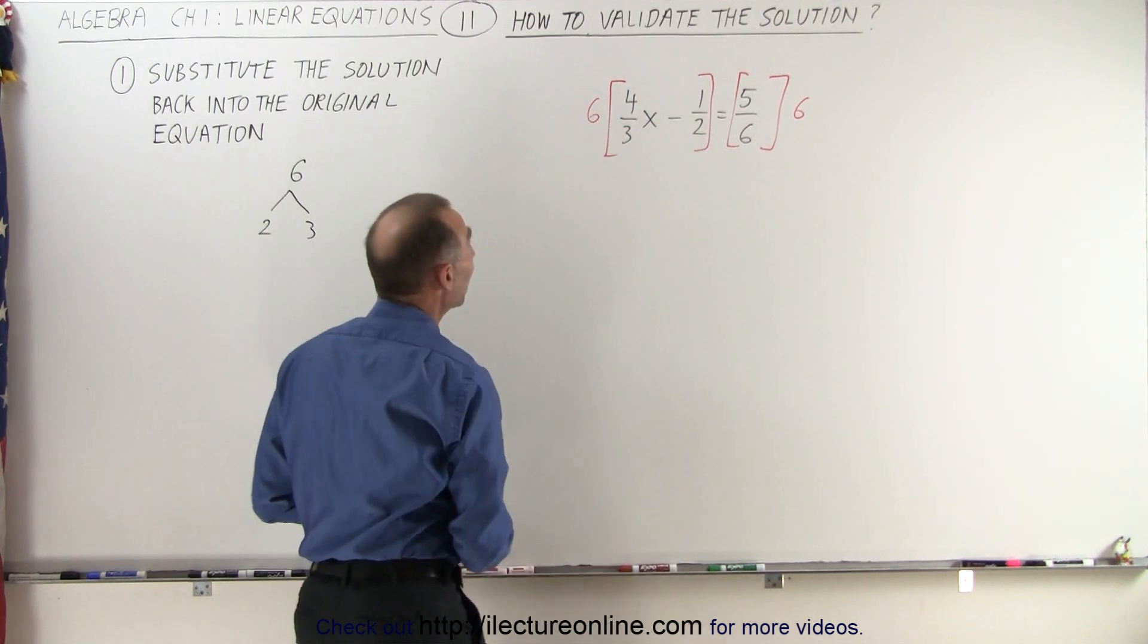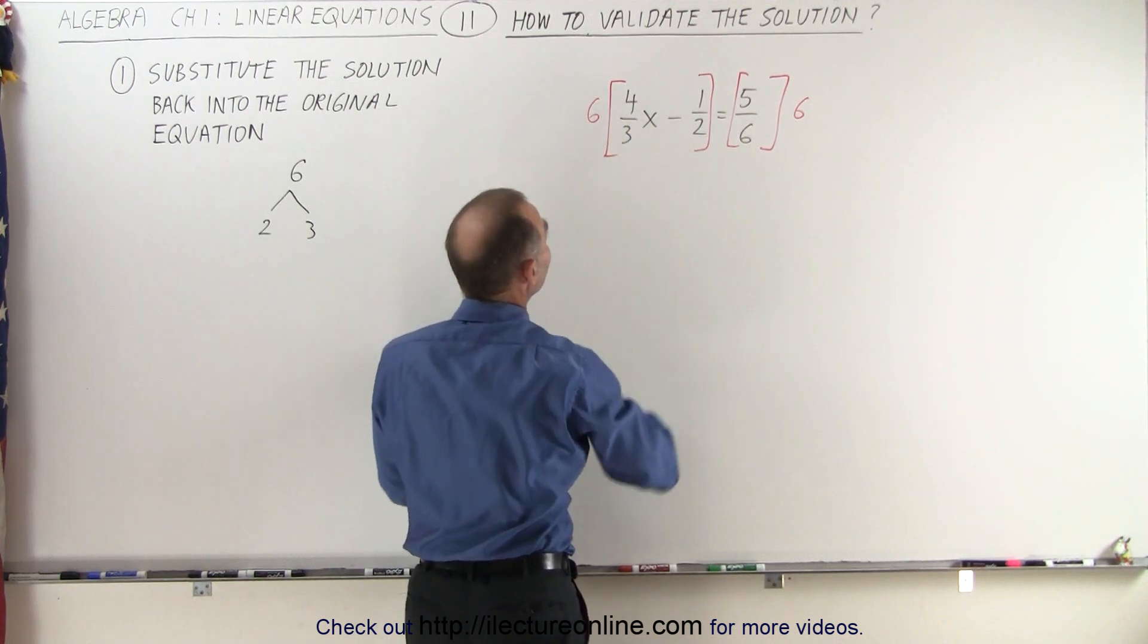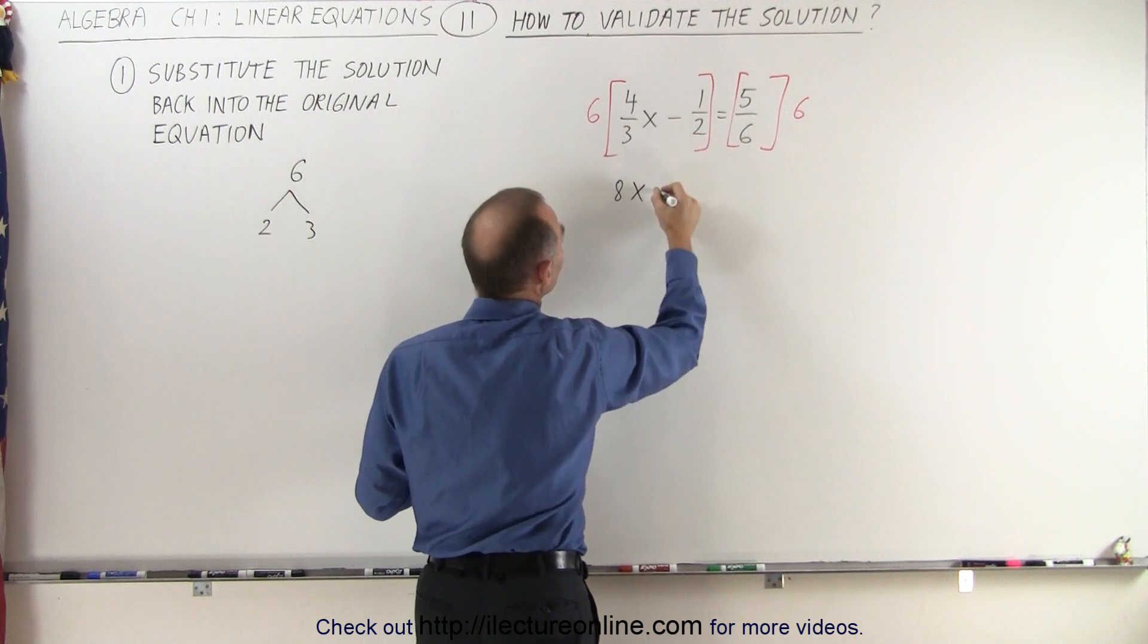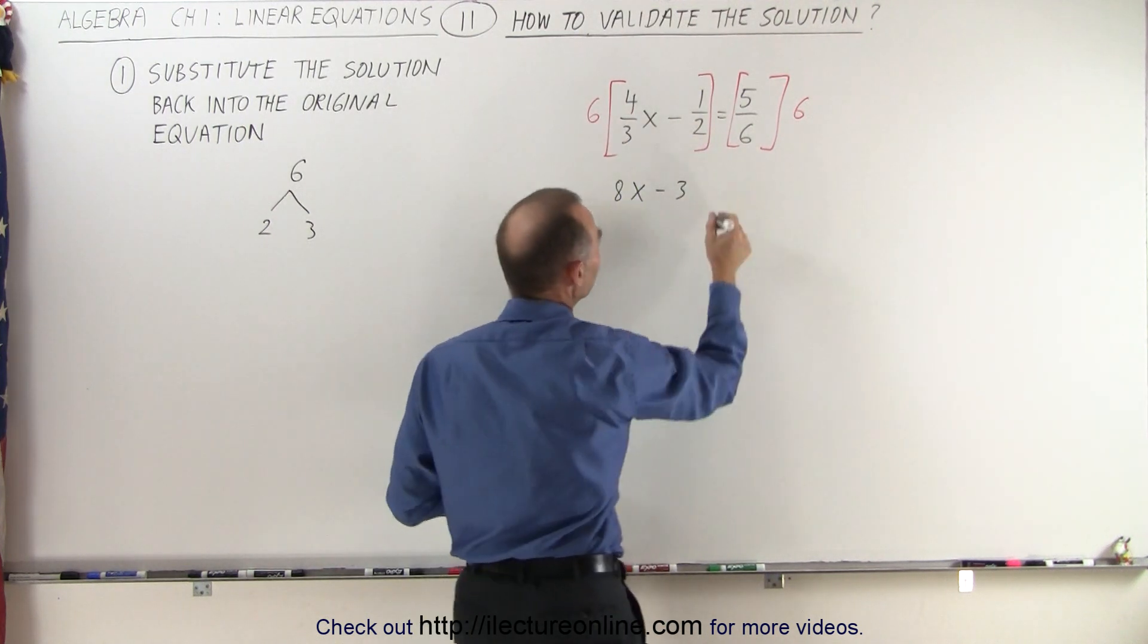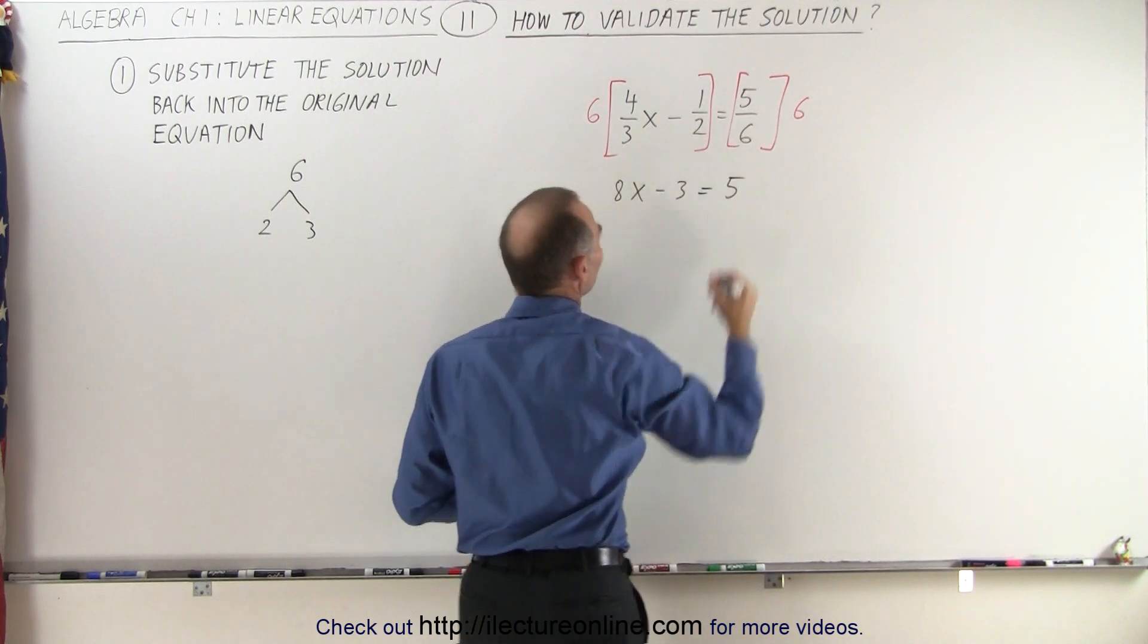Alright, what we have here now is we have 6 divided by 3 is equal to 2. 2 times 4 is 8x, and 6 times a half, that's equal to 3. So we distributed 6 over the two terms on the left side, and on the right side 6 divided by 6 is 1, so we end up with 5.